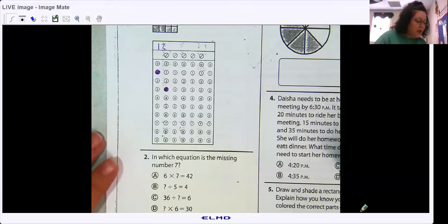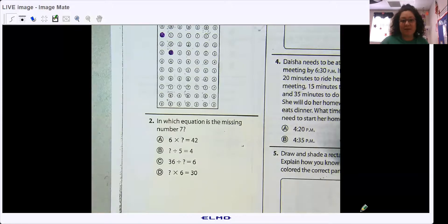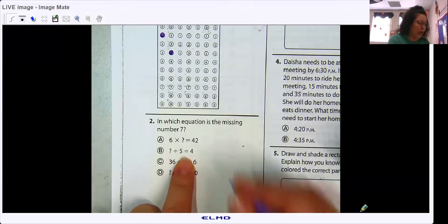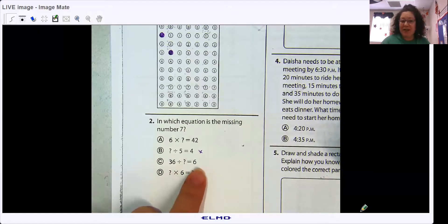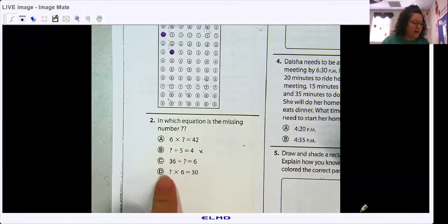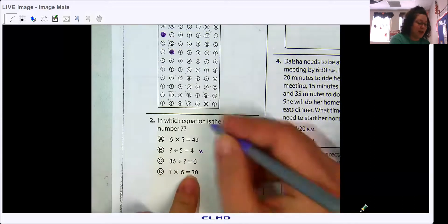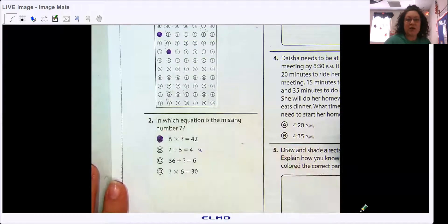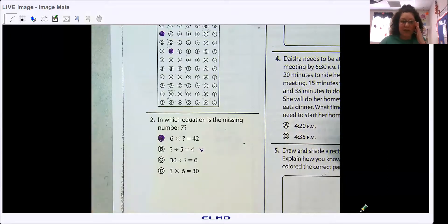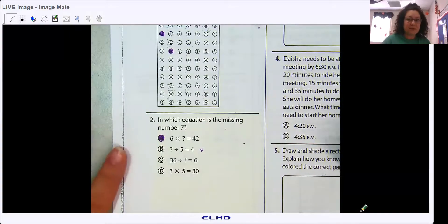Okay. In which equation is the missing number seven? Again, this is why you need to know your multiplication facts. Which one? 7 divided by 5 is 4? No. 36 divided by 7 is 6? No, because I know 6 times 6 is 36. Question mark times 6 is 30? No. 5 times 6 is 30. 6 times 7 is 42. So you really should be practicing those multiplication facts. Because if you know how to multiply, you also know how to divide. We talked about that a while ago.